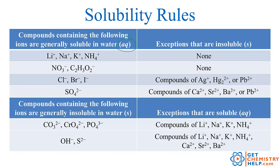All sulfates are aqueous, unless it's calcium sulfate, strontium sulfate, barium sulfate, or lead(II) sulfate. The bottom half of the table tells you which ions are going to be solid or insoluble. Anything with carbonate, chromate, or phosphate is a solid, except anything with lithium, sodium, potassium, or ammonium — those are always soluble. Same with hydroxide or sulfide — these are always solids, except with lithium, sodium, potassium, ammonium, calcium, strontium, or barium. All other hydroxides and sulfides would be solids.